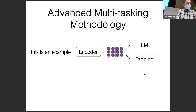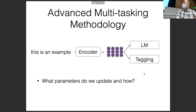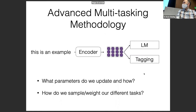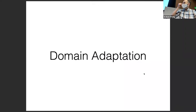With respect to multitask learning, I'm going to talk about a few important pieces of methodology — specifically how to do selective parameter sharing, and also how to sample or weight different tasks, domains, or languages. These are all tools that can be useful for you as well.